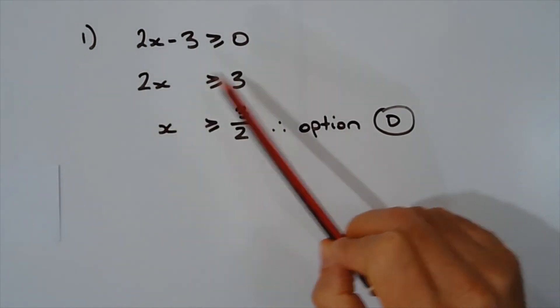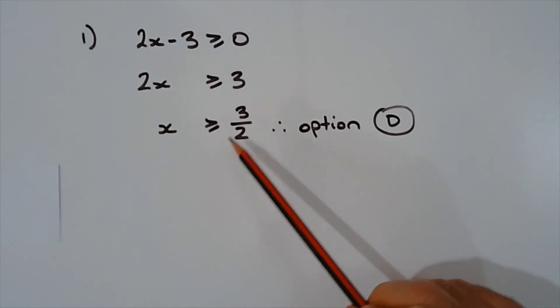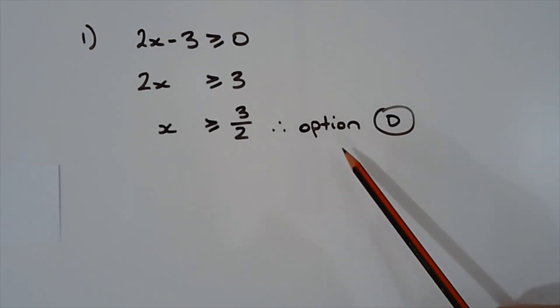And then dividing both sides of the inequality by 2, we have x is greater than or equal to 3 over 2. So therefore the answer is option D.